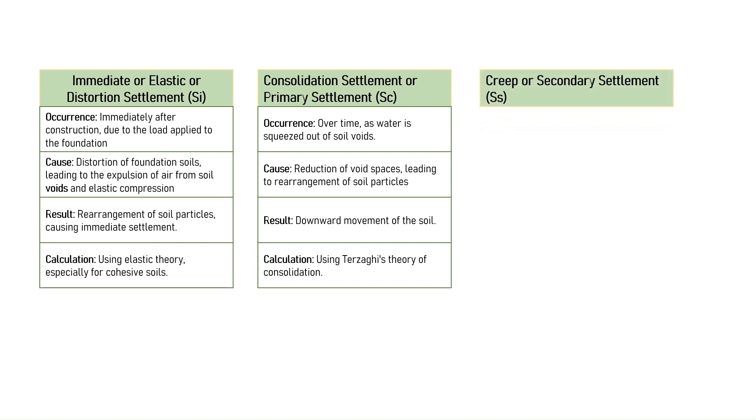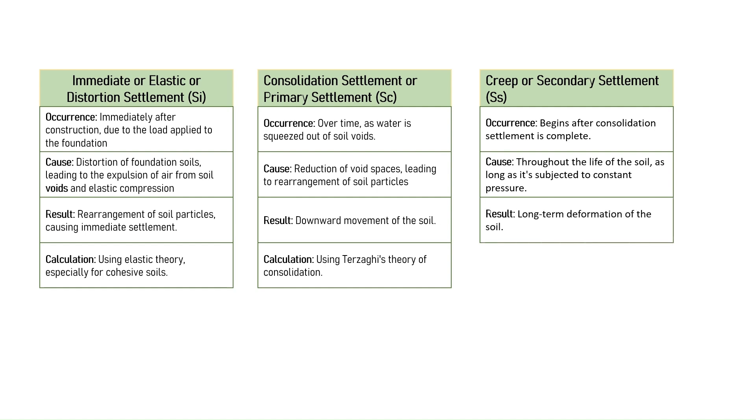Number three is creep settlement or secondary settlement, represented as SS. Creep settlement or secondary settlement begins after the completion of consolidation settlement. This component occurs throughout the life period of the soil as long as it is subjected to a constant pressure of the load. Hence, the total settlement is the sum of the immediate settlement, the consolidation settlement, and the creep settlement. Total settlement equals SI plus SC plus SS.